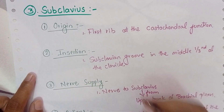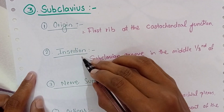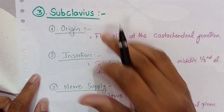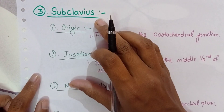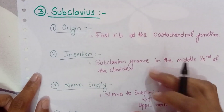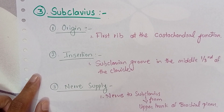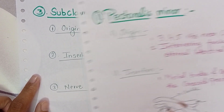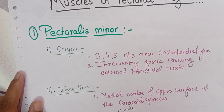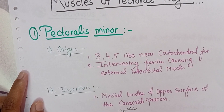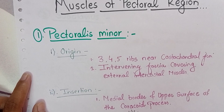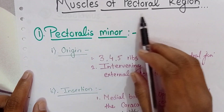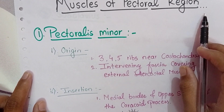We have seen the origin, insertion, nerve supply, and action of the subclavius muscle. Along with that, we have seen the pectoralis minor muscle. In this way, we have completed the muscles of the pectoral region.